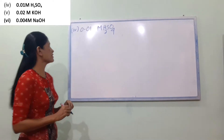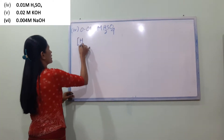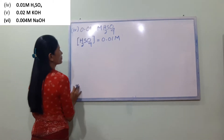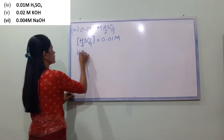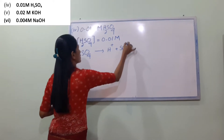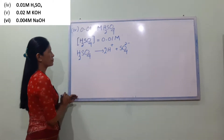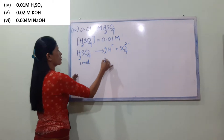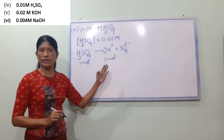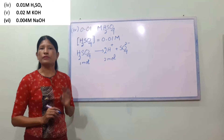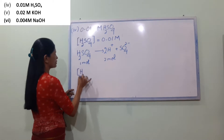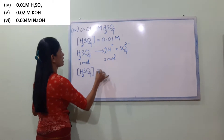So we will find the concentration of H2SO4, which is equal to 0.01 mol. The dissociation equation is: H2SO4 → 2H⁺ + SO4²⁻. So for 1 mol of H2SO4, we get 2 mol of H⁺.